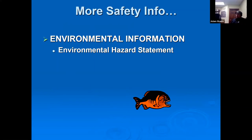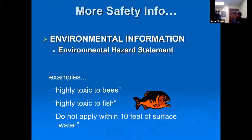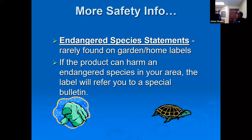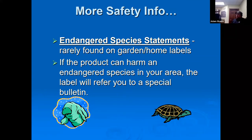Environmental hazard statements will tell you if the product is toxic to bees or fish, and may indicate not to apply within 10 feet of surface water if you have a pond nearby. There may also be endangered species statements — one county in Indiana has endangered species considerations — and this is especially important to be aware of in other states before applying product.